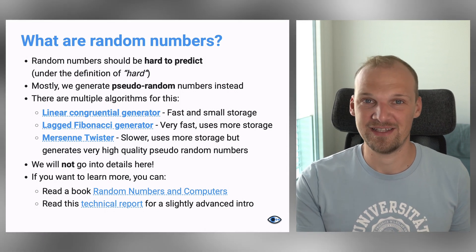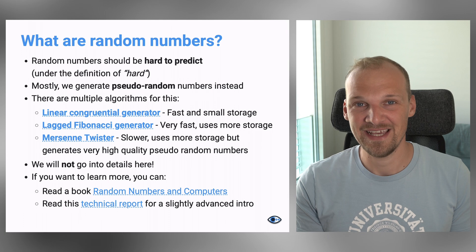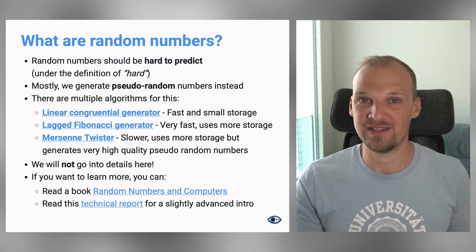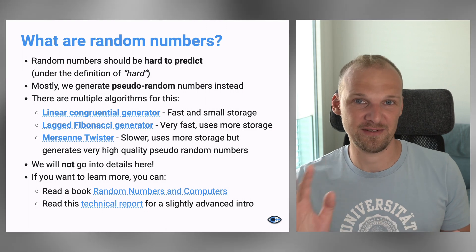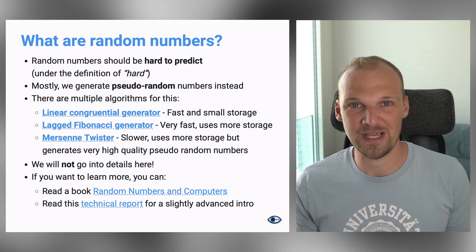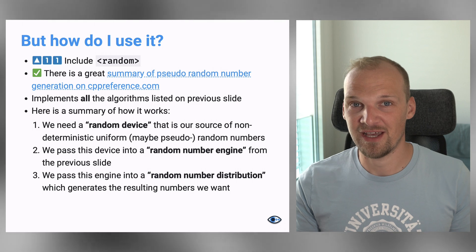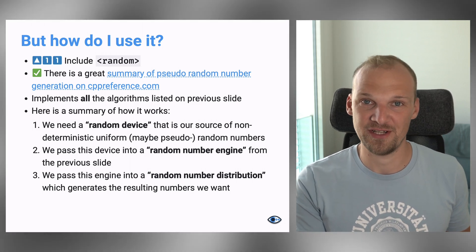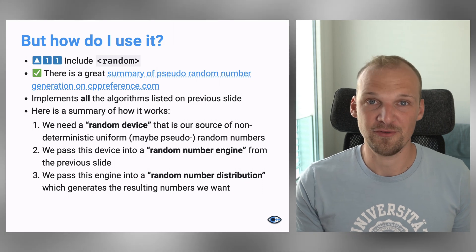So if you really want to look into more details about that, you can read a book, I linked it in the bottom of the slide, or just read this technical report that is a little bit advanced, but I think it gives a pretty nice overview of the different ways of how to generate random numbers. The question that I will try to answer here is how do you use these different generators in C++, of course.